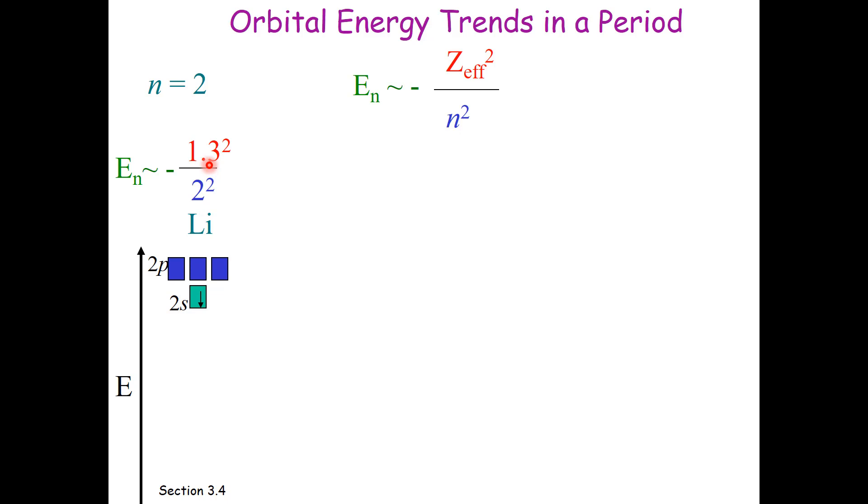which means that this becomes more negative. And if it becomes more negative, the orbital energy becomes closer to the nucleus.